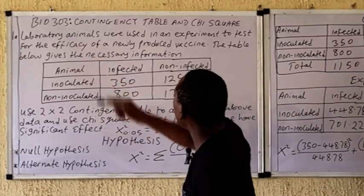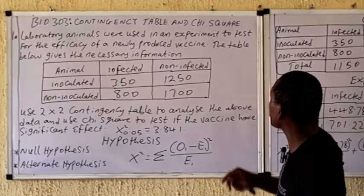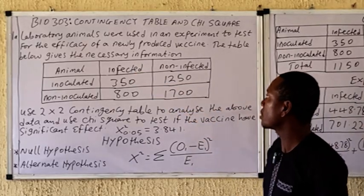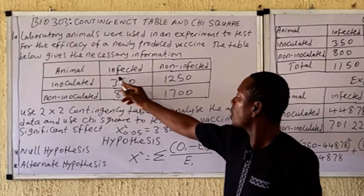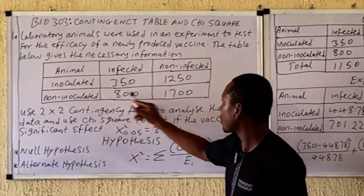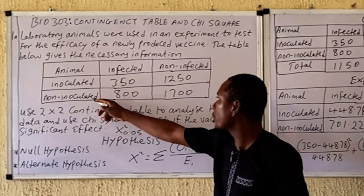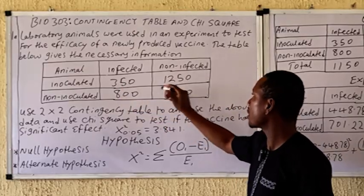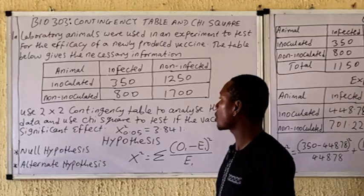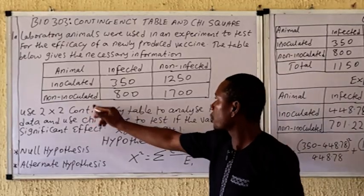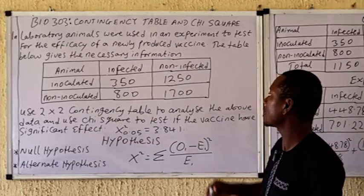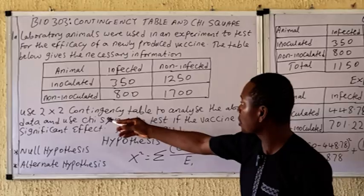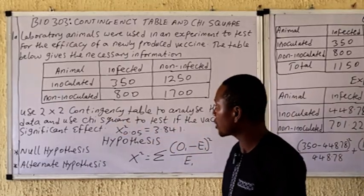For the question: laboratory animals were used in an experiment to test for the efficacy of a newly produced vaccine. The table below gives the necessary information. For the inoculated group, we have 350 infected and 1,250 non-infected. For the non-inoculated group, we have 800 infected. We are asked to use a two-by-two contingency table to analyze the data.